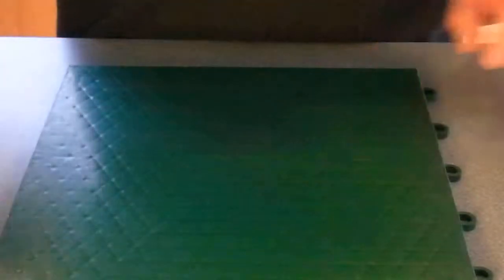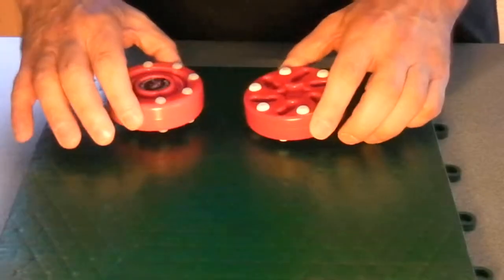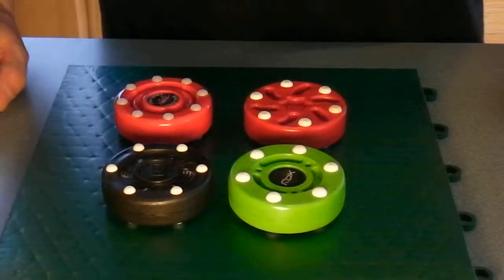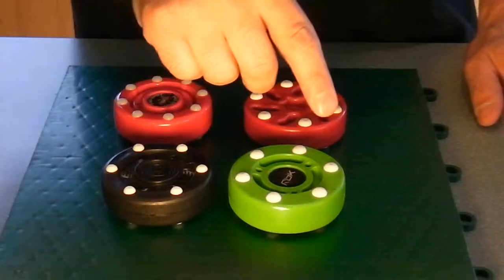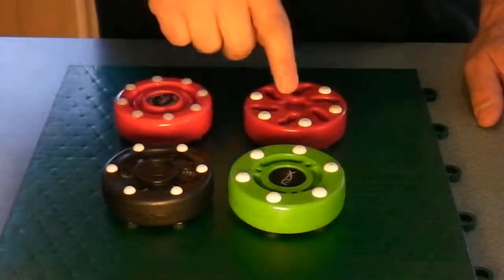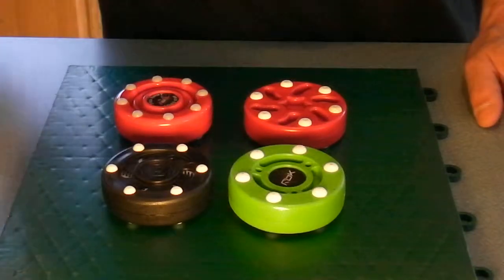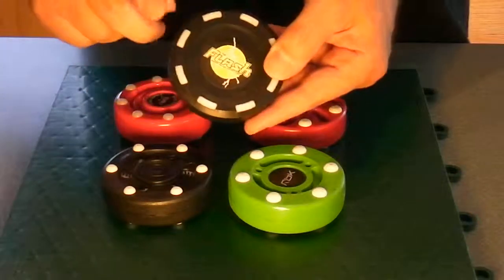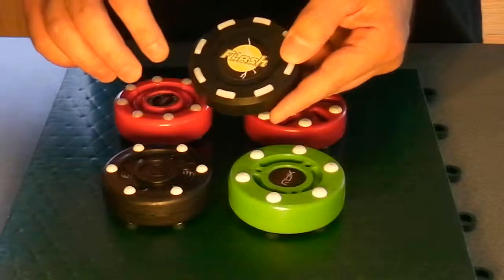So moving on, what we're going to do is we're going to go out into the warehouse and we're going to do a speed test between these four competing pucks. We've got Rocket Puck, the Reebok Speed Puck, Mach 1, and IDS. So let's go out and speed test these and you'll see our decision to use the ProPuck material and change in material.